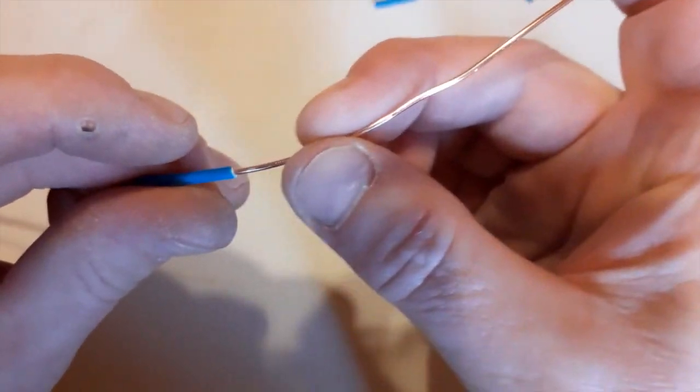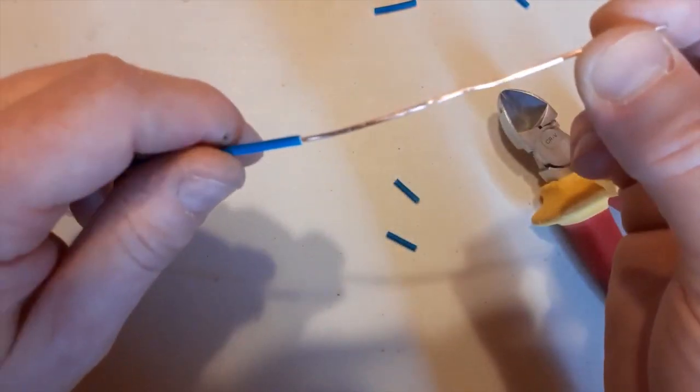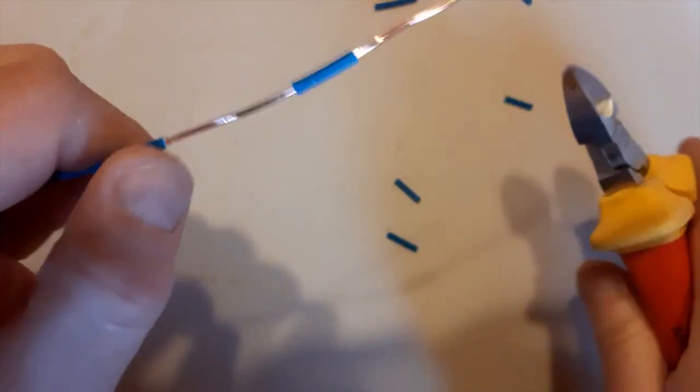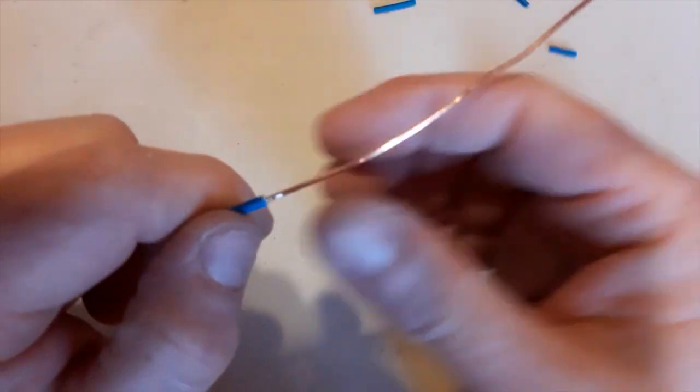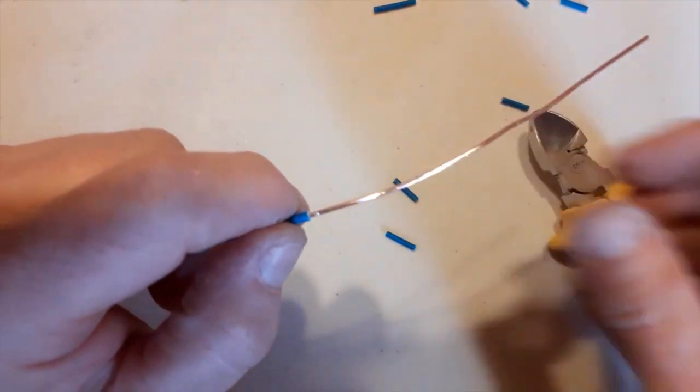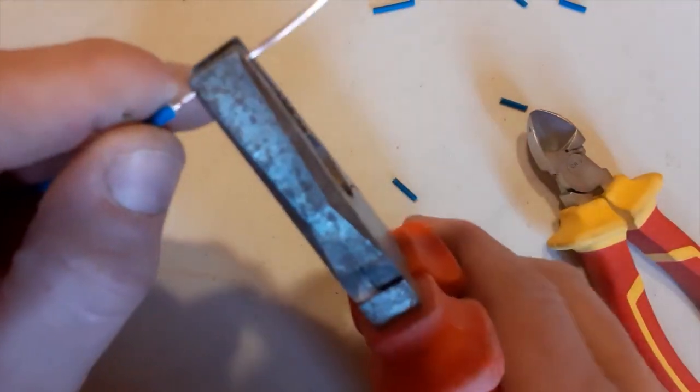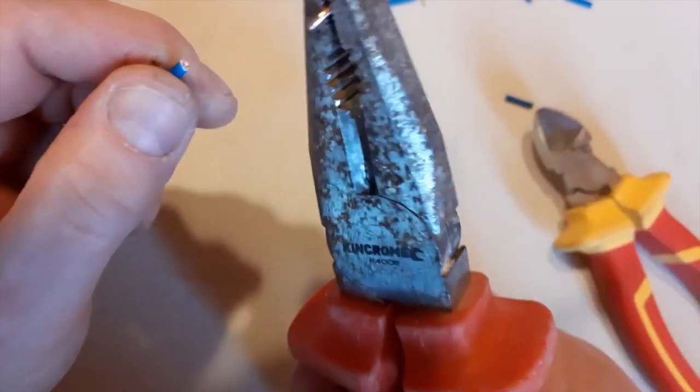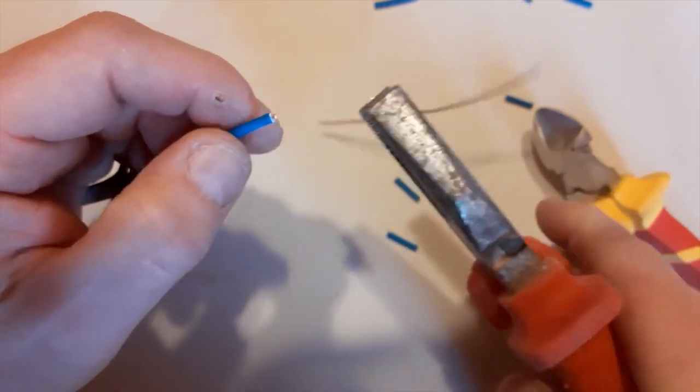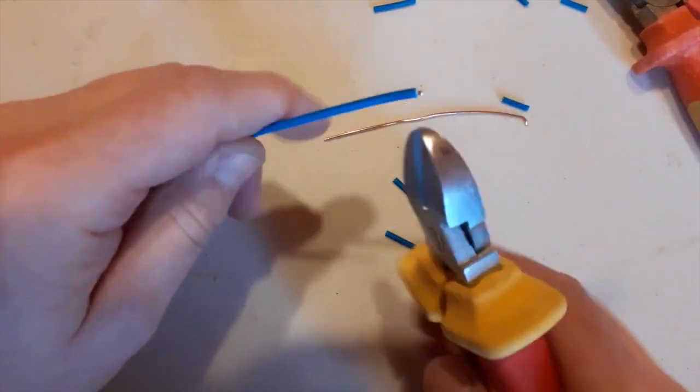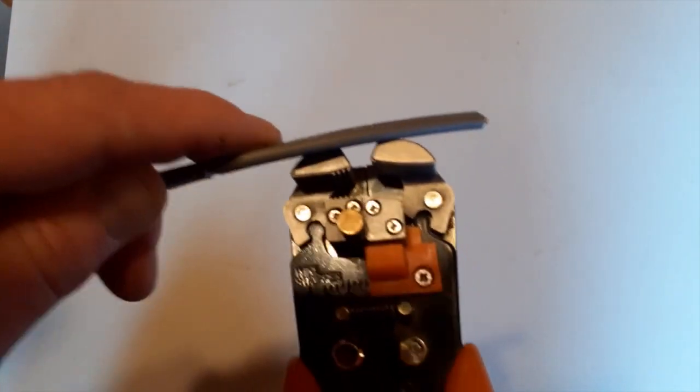But when you run your fingers up and down it, you can feel little nicks in it, and those nicks are quite a big weakness in the copper. When you bend it, it'll snap quite quickly. So let's have a go. One, two, three, four. See how quickly that snapped there because I just pressed down a little bit too hard on my snips and just scored the end of it.